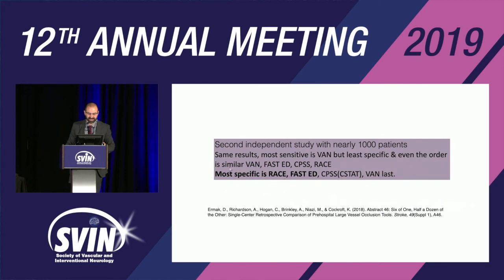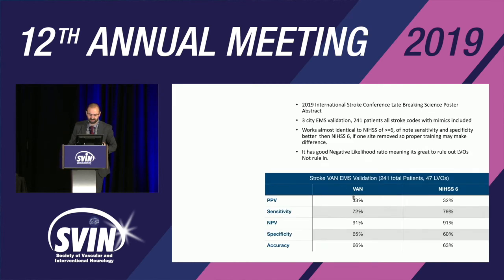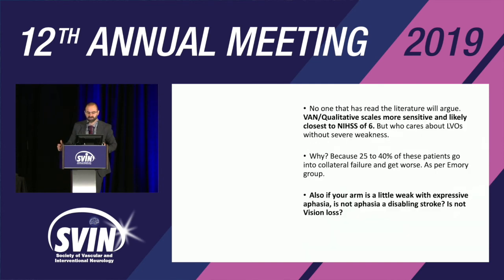Our data published at the International Stroke Conference confirmed what others are publishing. When we used VAN, it performed exactly the same as an NIHSS of 6 — positive predictive value identical, high sensitivity and negative predictive value. The tool was designed to perform like NIHSS-6, and it does in the field. Other tools are designed to perform like NIHSS-10 or higher, and they do. You have to pick what you want — there's no wrong answer.